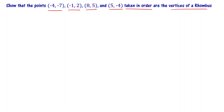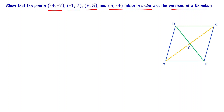This problem uses coordinate geometry concepts. First of all, we have properties of a rhombus. Look at this figure — this is a rhombus diagram. You have a rhombus called ABCD. Here are the coordinates taken in order. This is A, this is B, this is C, this is D.